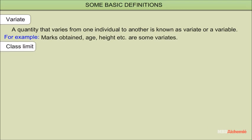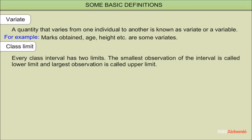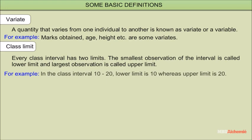Class limit: every class interval has two limits. The smallest observation of the interval is called the lower limit, and the largest observation is called the upper limit. For example, in the class interval 10 to 20, the lower limit is 10 whereas the upper limit is 20.